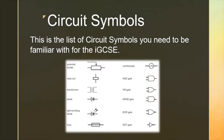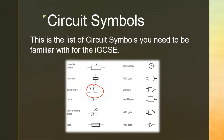On the last slide, the first one is a potential divider — I've got a whole lesson coming up on that, so don't worry too much about it now. We've then got a relay coil, which is going to feature later on in this lesson. The third one is a transformer — transformers are something we're not going to cover until Year 11, so don't worry too much about them now, but here is the symbol for when you get to that.